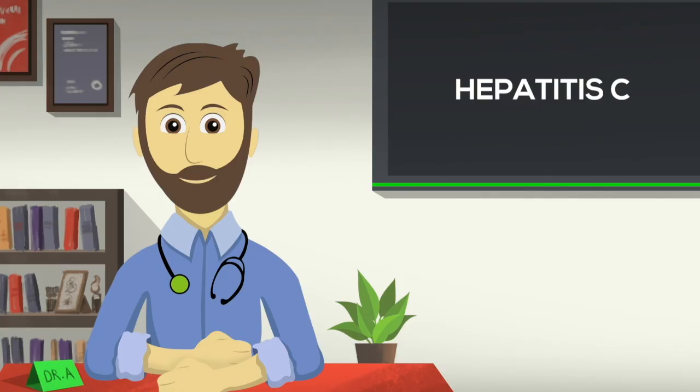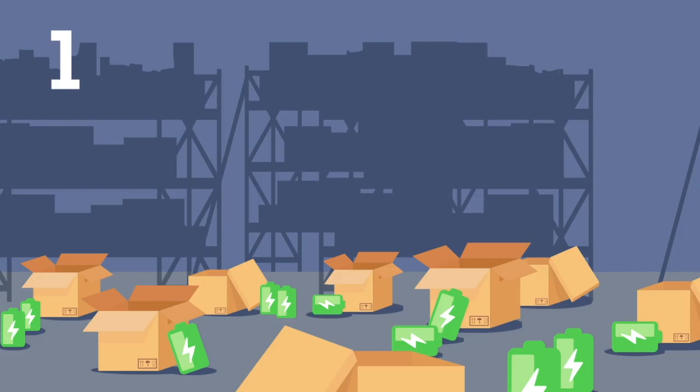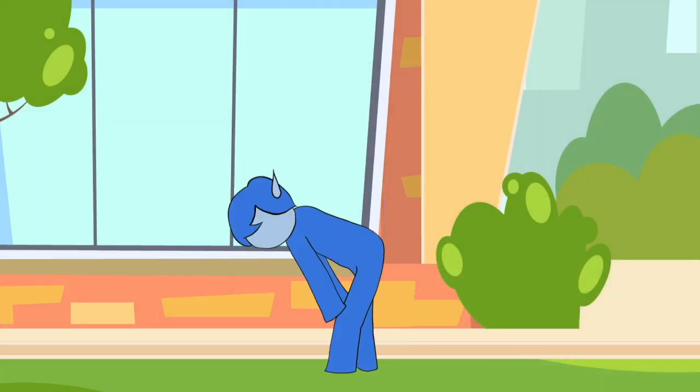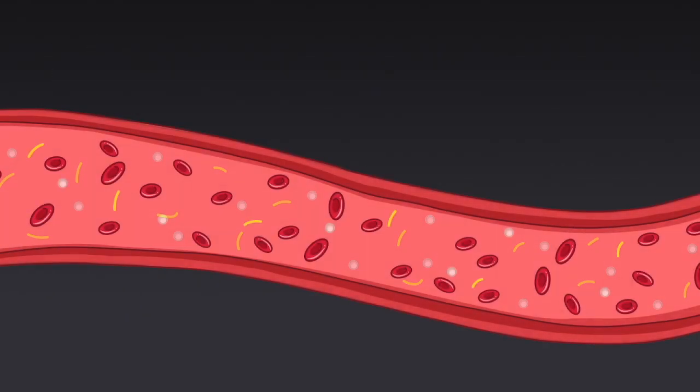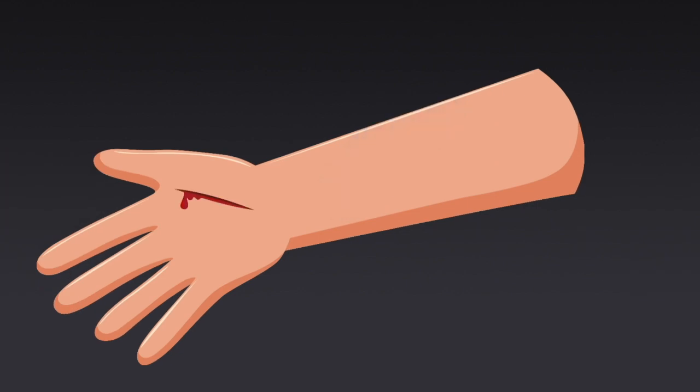Cirrhosis leads to many problems. First, the liver is not able to manage energy stores of body, which causes muscle loss, fatigue, and low appetite. Second, the blood becomes thin due to less platelets and clotting factors. This can result in easy bruising and bleeding.